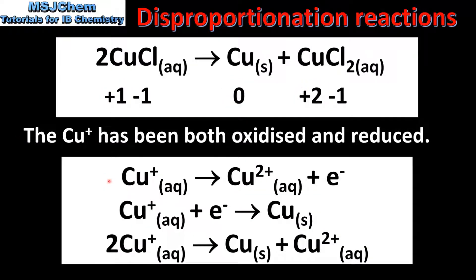So next we look at the two half equations and the net ionic equation. In the first half equation, the Cu⁺ ion is being oxidized to form the Cu²⁺ ion. In the second half equation, the Cu⁺ ion has been reduced to form a Cu atom. And here we have the net ionic equation for the reaction.